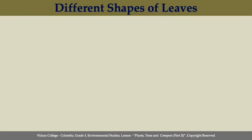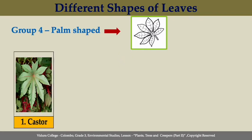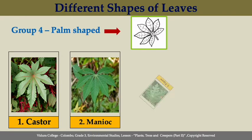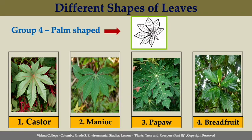The fourth shape is palm-shaped. Palm-shaped leaves have the shape of our palm. There are many leaves with palm-shaped. As you can see in these pictures, castor, manioc, papaya, and breadfruit leaves can be taken as palm-shaped leaves.